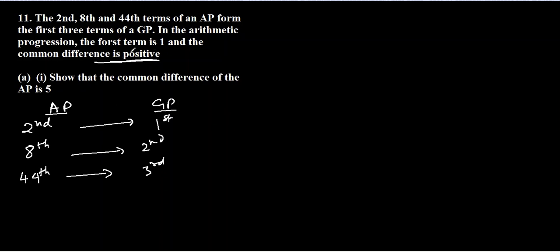They're also saying that the common difference is positive and the first term is one. So if we assume that a is the first term of AP, the second term will be a plus D, because we know that a_n equals a plus n minus 1 times D. So the eighth term will be a plus 7D and the 44th term will be a plus 43D.